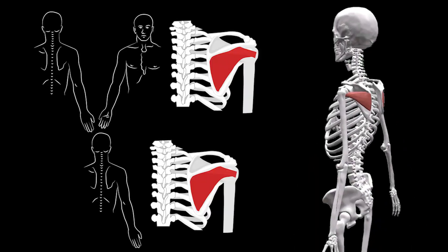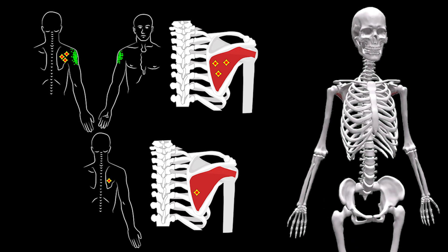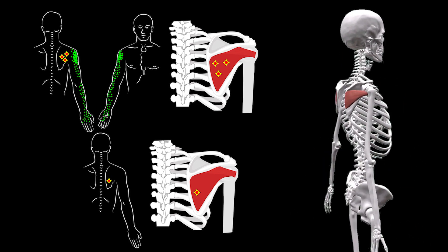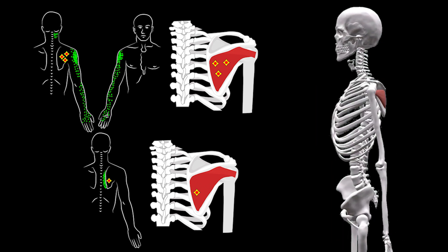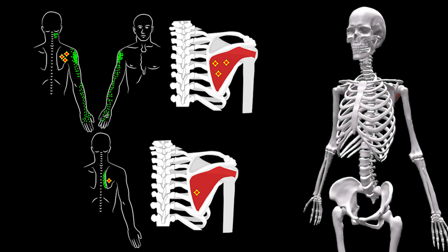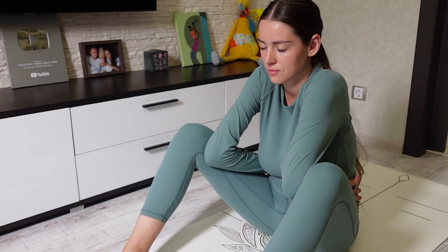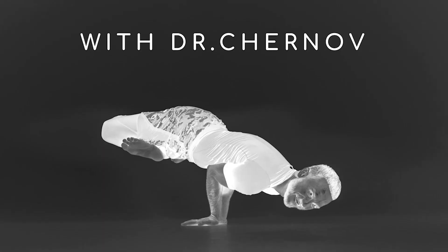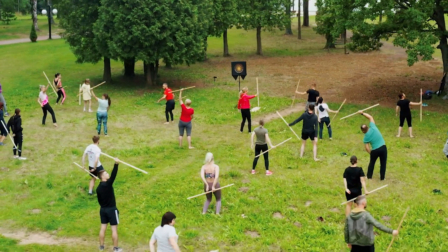I wish you all good health. In this video, we'll take a closer look at the infraspinatus muscle, the trigger points of which can cause pain in the shoulder joint, along the anterior lateral surface of the arm, along the vertebral edge of the blade, and at the base of the neck. Let's take a look at the exercises using which you can eliminate pain at home. I'm Sergei Chernov, a doctor, yoga master, and the creator of the wellness program with a stick by Dr. Chernov.